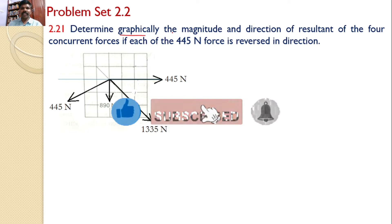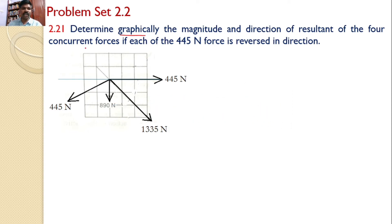Determine graphically the magnitude and direction of the resultant of the four concurrent forces if each of the 445 Newton forces is reversed in direction. The reversed directions of the 445 Newtons are already indicated in the diagram. One force of 445 Newtons is acting in this direction, 819 Newtons is acting in the downward direction, 1335 Newtons is acting in this direction, and 445 Newtons force is acting in this direction. Our interest is to find the resultant of these four forces using the graphical technique.